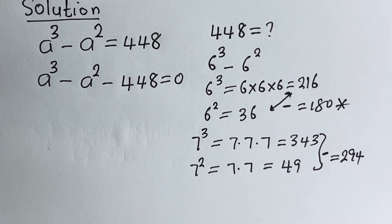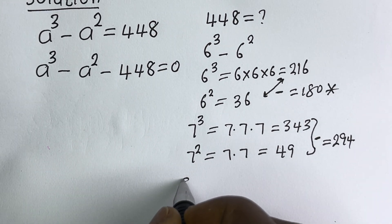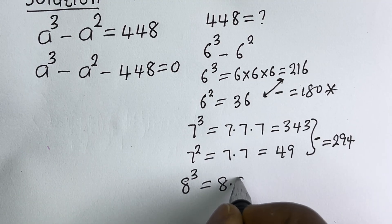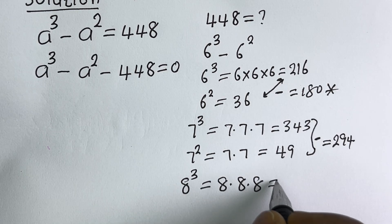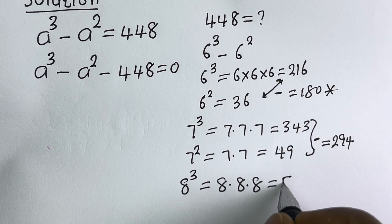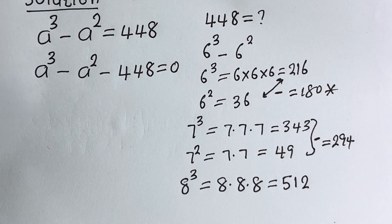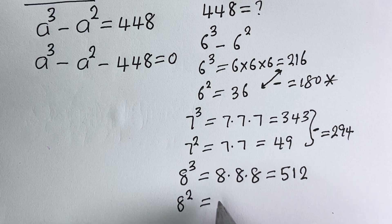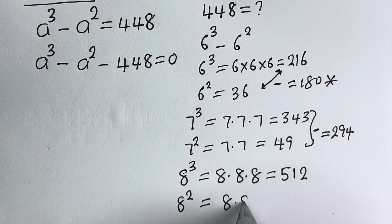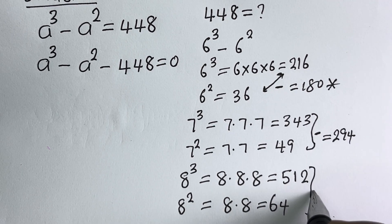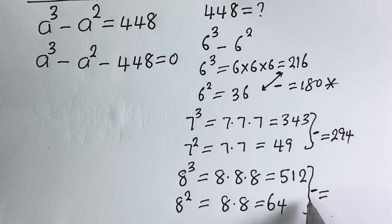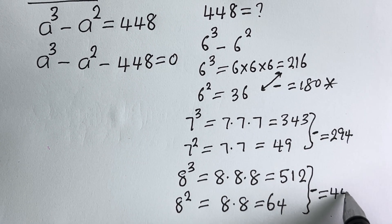Now let's consider 8. 8 raised to power 3 is equal to 8 × 8 × 8, which is 512. And 8 squared is equal to 8 × 8, which is 64. Subtracting the two gives 448.